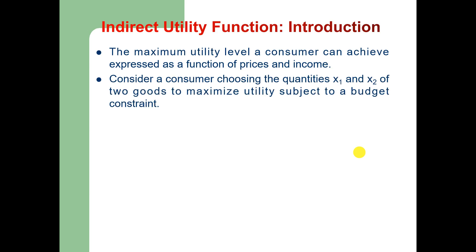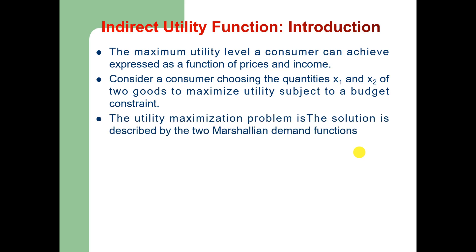For example, if we consider a consumer choosing the quantities X1 and X2 of two goods to maximize utility subject to a budget constraint, then the solution is described by the two Marshallian demand functions, where X1 is a function of the price of good one, price of good two, and income. Similarly, X2 is the Marshallian demand for good two, which is also a function of price of good one, price of good two, and income of the consumer.